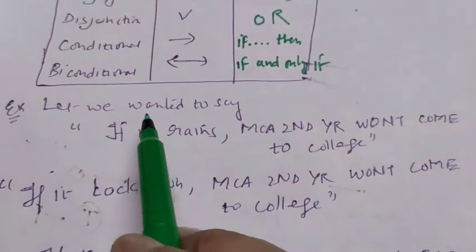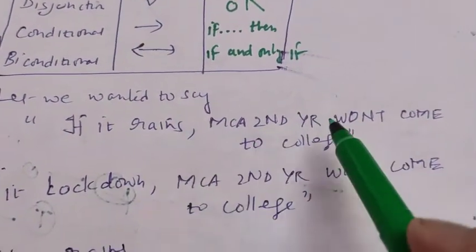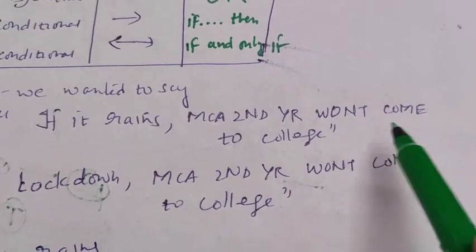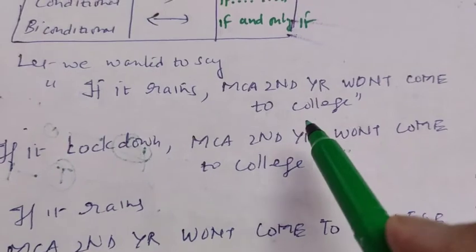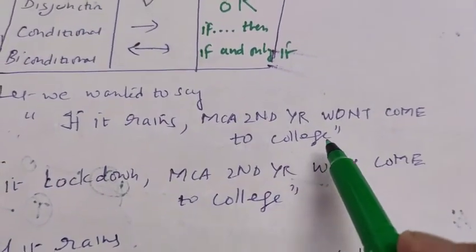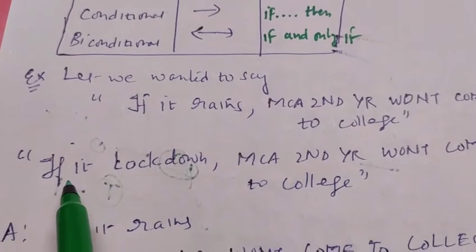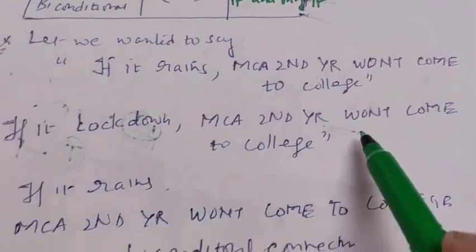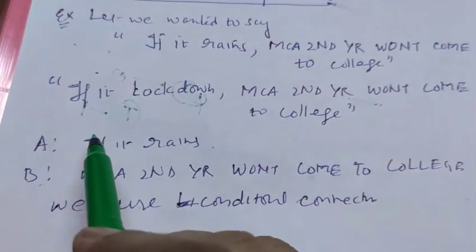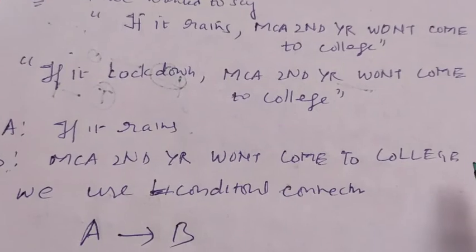For example, let us wanted to say if it rains, MCA second year won't come to college. But you people always come because you don't care for the rain. Now for second statement, if it lockdown MCA second year won't come to college.